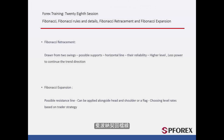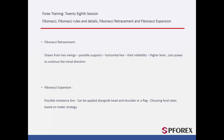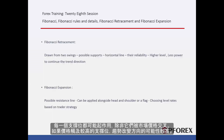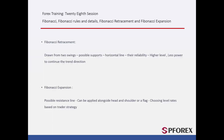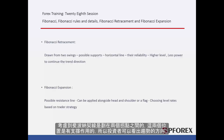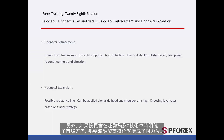Fibonacci retracement can be drawn between two swings, which show probable supportive levels. The effect of each level may be applicable unless it is crossed by market price. If price reaches higher levels, the trend has more tendency to change direction. Considering that Fibonacci is drawn between two reverse points, levels are supportive when a trader realizes the whole trend direction. Otherwise, if a trader determines the direction of the trend after it hits the zero level, the Fibonacci levels would act as resistance.